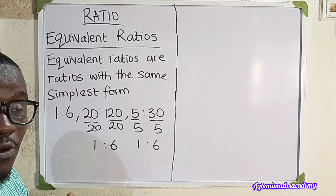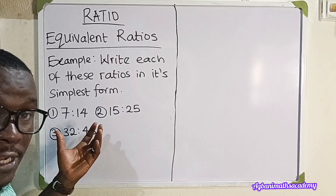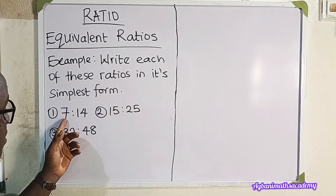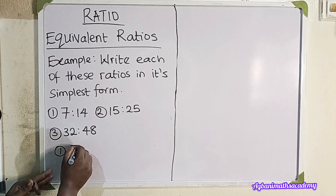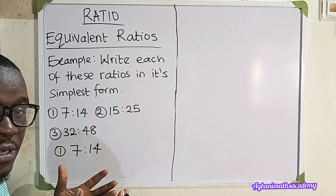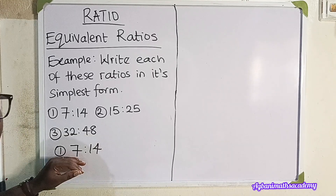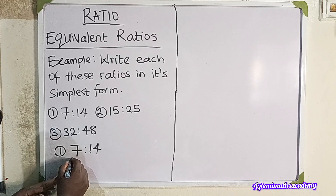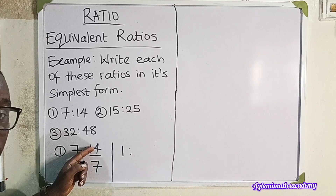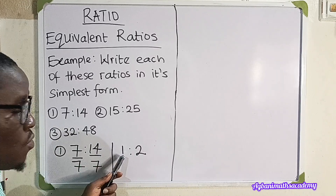Let's look at two examples where we write ratios in their simplest form. Number one: 7 is to 14. We're going to look for a number that will divide both 7 and 14 without leaving a remainder. The only number that can do that is 7. So we divide 7 by 7 and 14 by 7. 7 divided by 7 is 1, and 14 divided by 7 is 2. So 7 is to 14 in its simplest form is 1 is to 2.